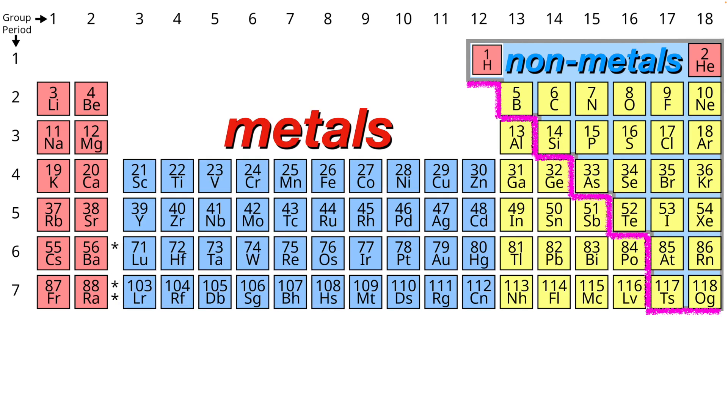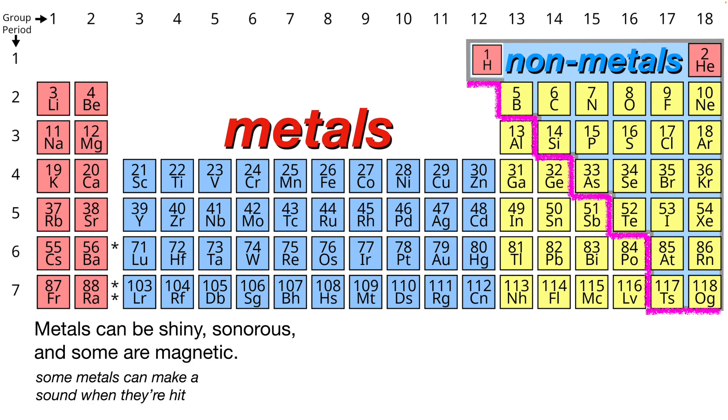Let's look at a couple more random things between metals and non-metals. Metals can be shiny, sonorous and some are magnetic. Sonorous is an adjective that just means some metals can make a sound when they're hit by something. They sort of resonate and make a sound. Non-metals are dull, not sonorous, and none of them are magnetic.